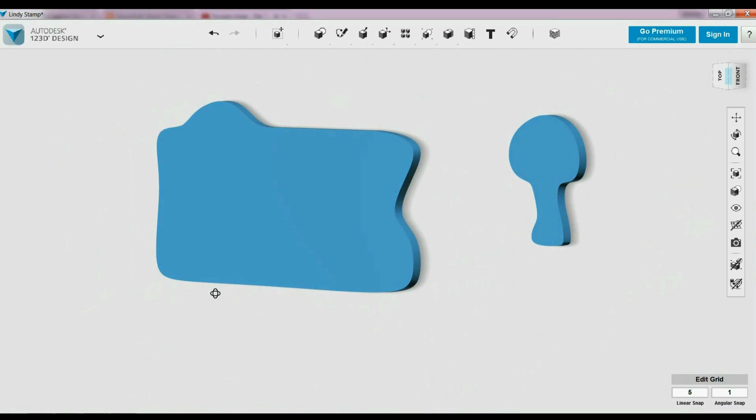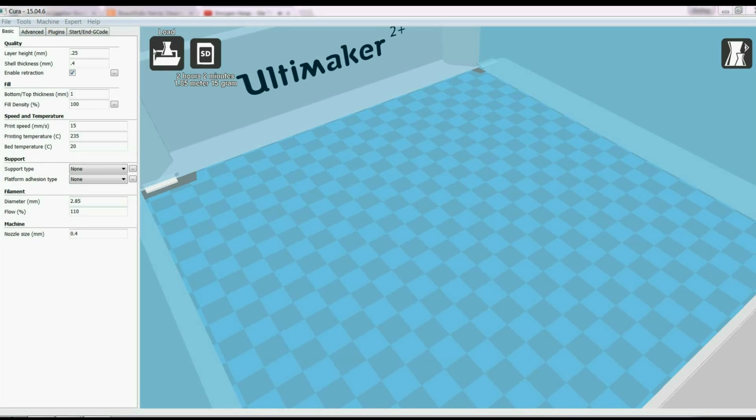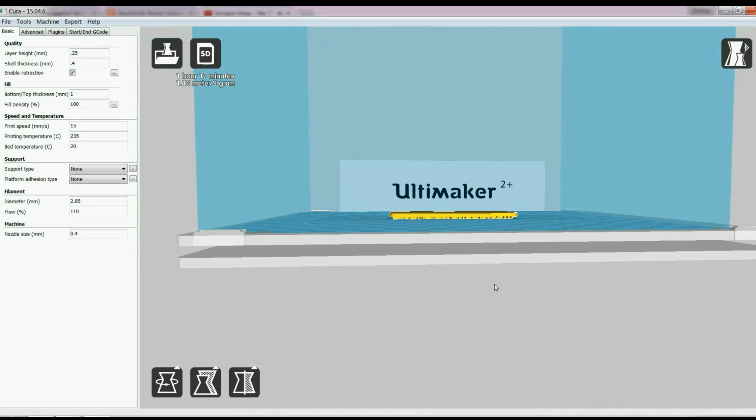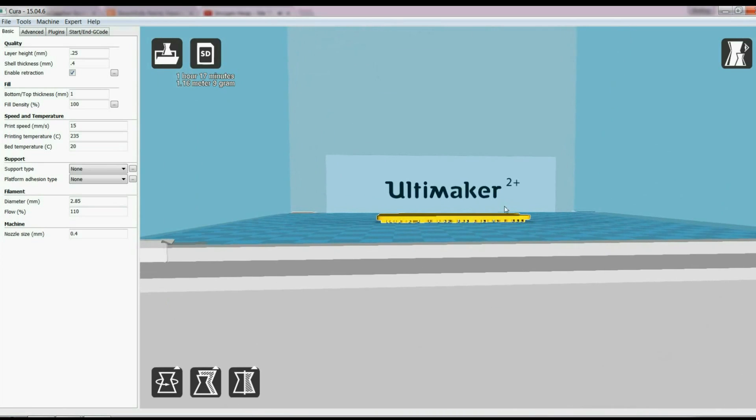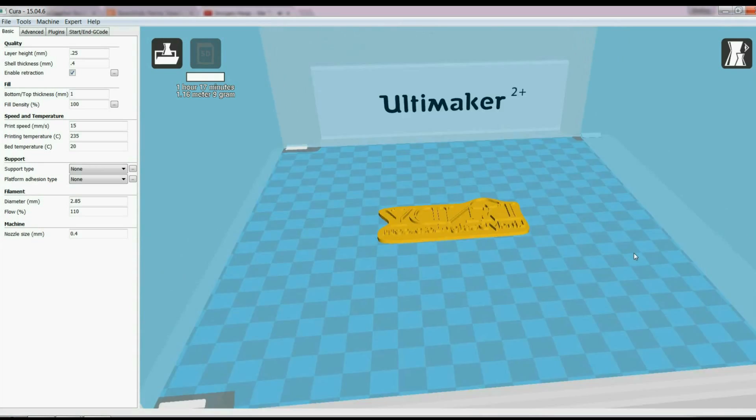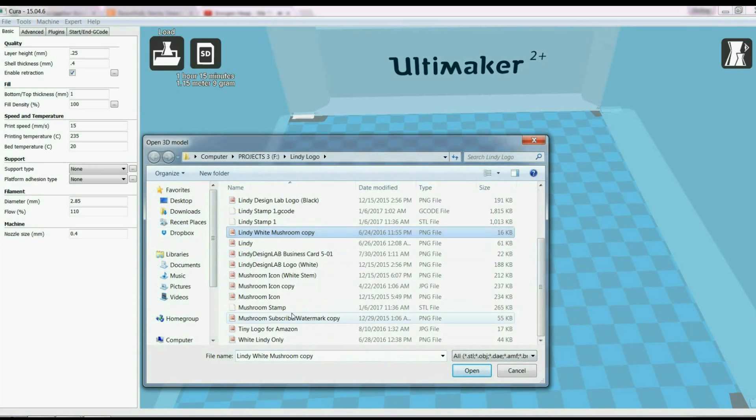Of course the first step you're going to need a 3D model. I went ahead and did my logo here. The mushroom part I did in Illustrator first and then just exported as an SVG. And then the text portion I just used the text tool in 123Ddesign. Once you get these how you like them, just export that and load it up into your slicer.